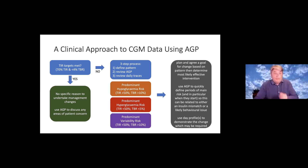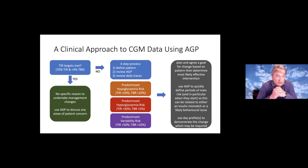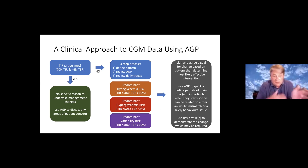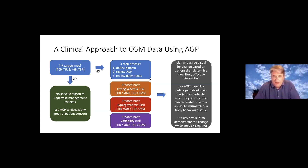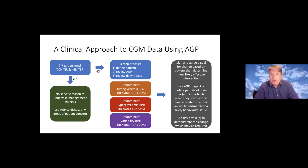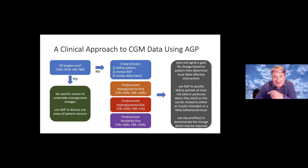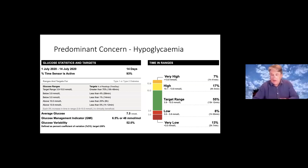In terms of how to interpret the data, time in range makes a very good overall view. If the time in range targets are good then the consultation around glucose is specifically driven by what the person with diabetes wants to discuss, because if I'm trying to change it when it's already good I'm just as likely to make it worse. If it's not good then we have a three-step process: define the pattern, then look at the AGP and daily traces to work towards a solution. We need to look at low glucose risk, high glucose risk, and variability risk — and I'm going to quickly run through an example of each.